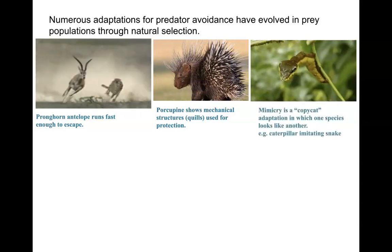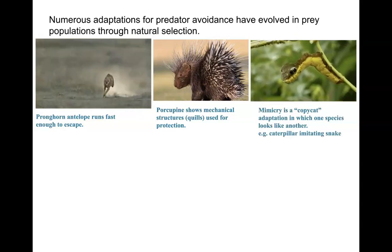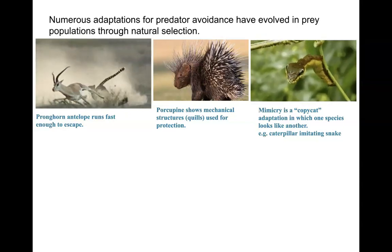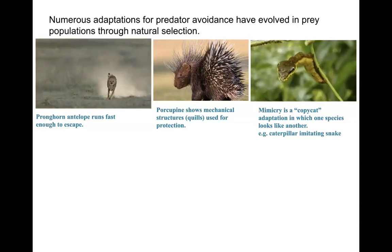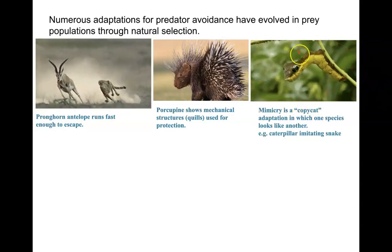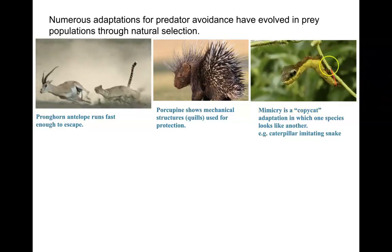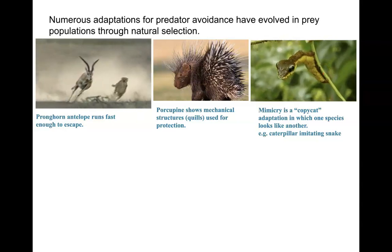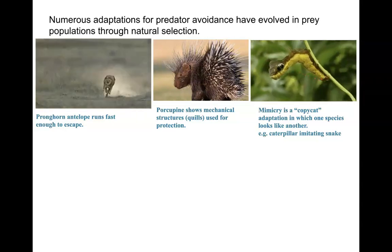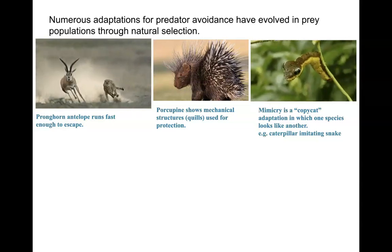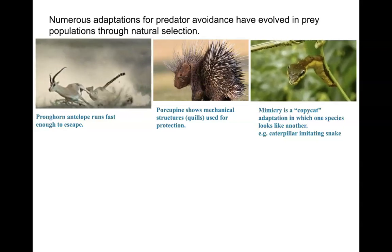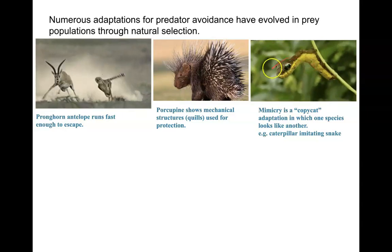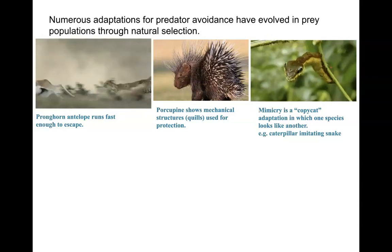Mimicry is a really cool adaptation to ward off predators — it's a copycat event where you imitate something that would make the predator leave you alone. This is actually not a snake, even though it looks like one with those eyes and the way the abdomen bends. That's actually a caterpillar mimicking a snake so that organisms that would prey upon it — a bird or rodent, for instance — would not come near it.